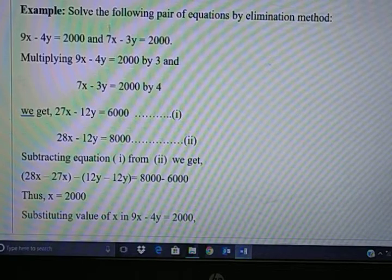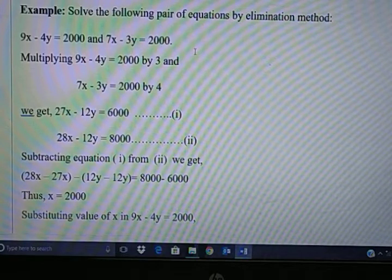Elimination method means you have to eliminate one variable. When you eliminate one variable, then only you can find out the other variable. Together it is impossible.